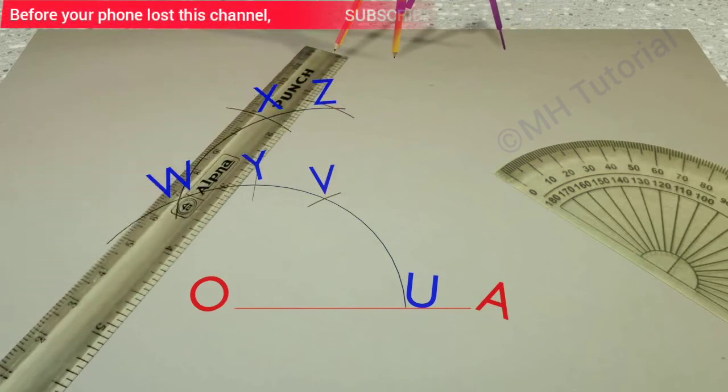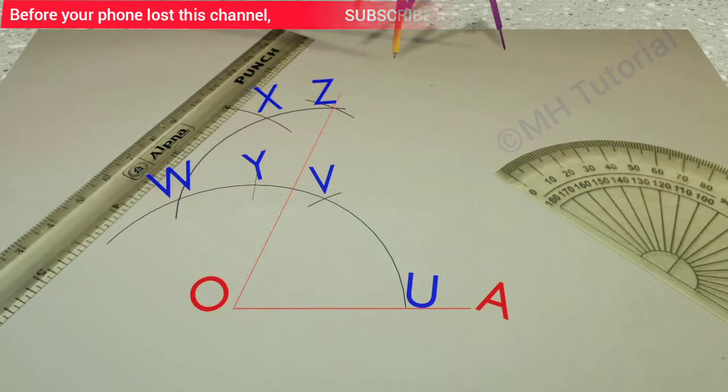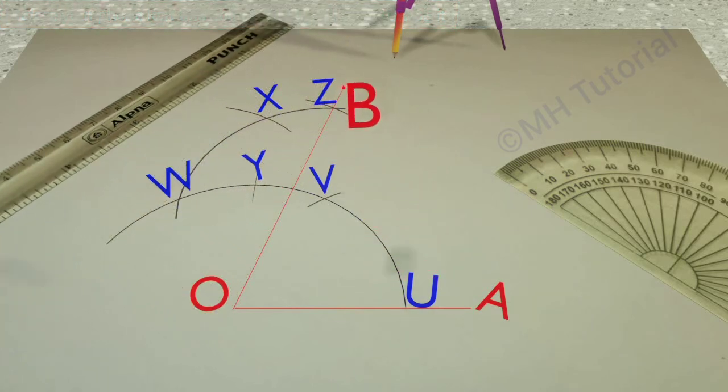With the help of a scale and a pencil, point Z and point O are joined. So, we got the required angle. Its name is angle AOB.